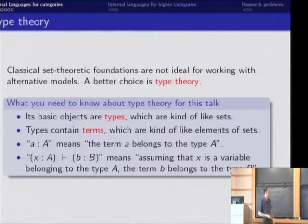And then there's this sort of thing called a typing judgment, which says given a variable of type A, then there's this term b, which belongs to type B. And you can have more than one variable and so on as well. And so then we can build up mathematics out of types, the same way that we build mathematics out of sets.